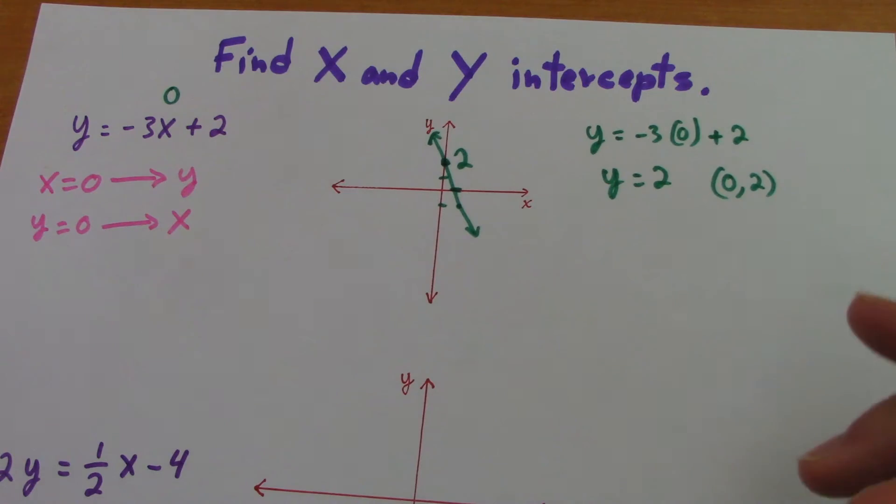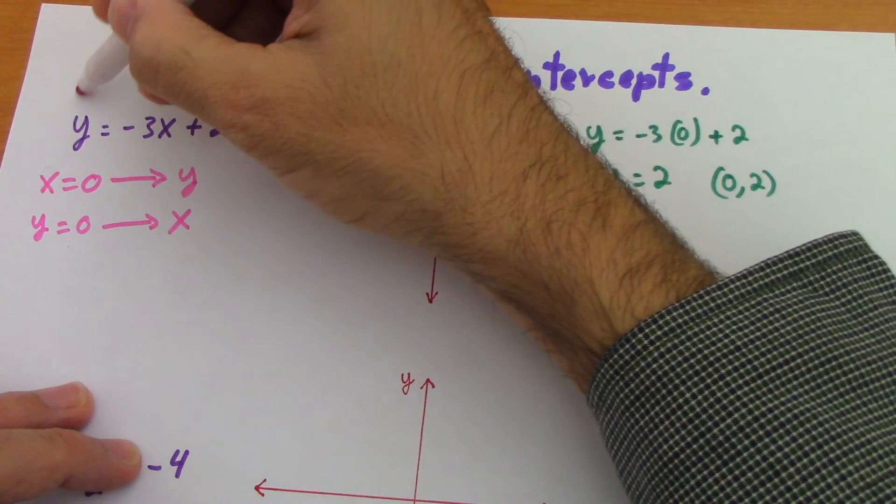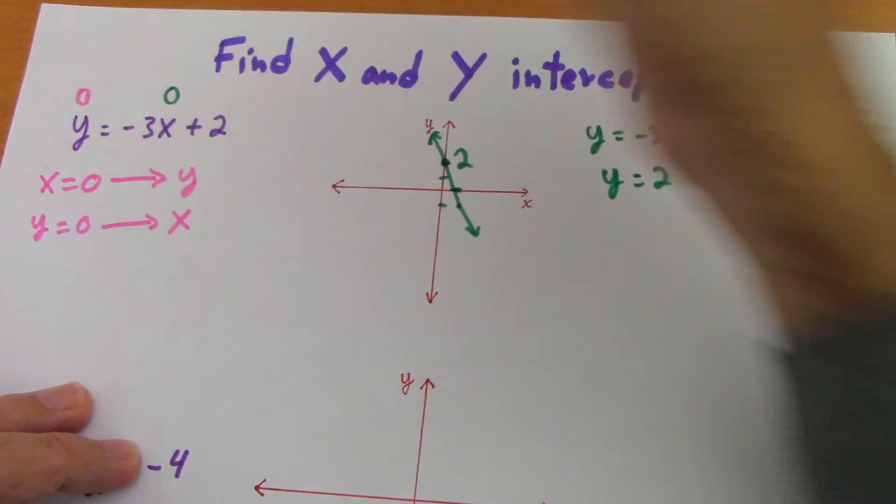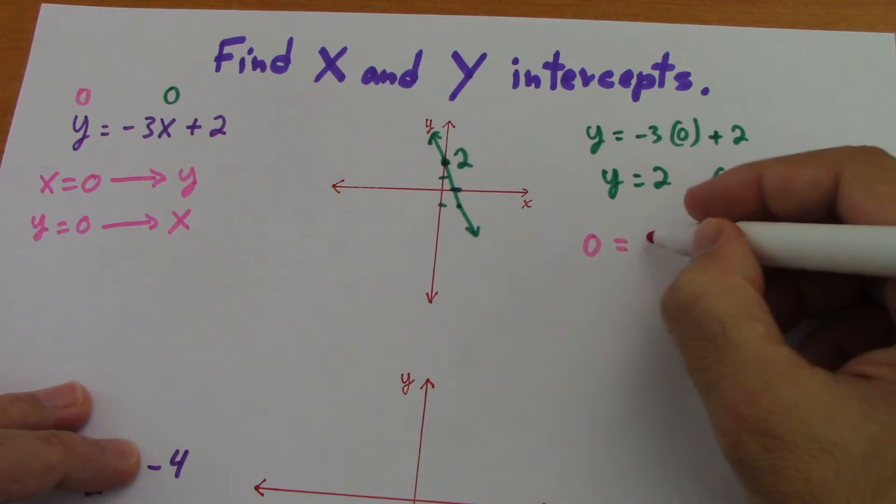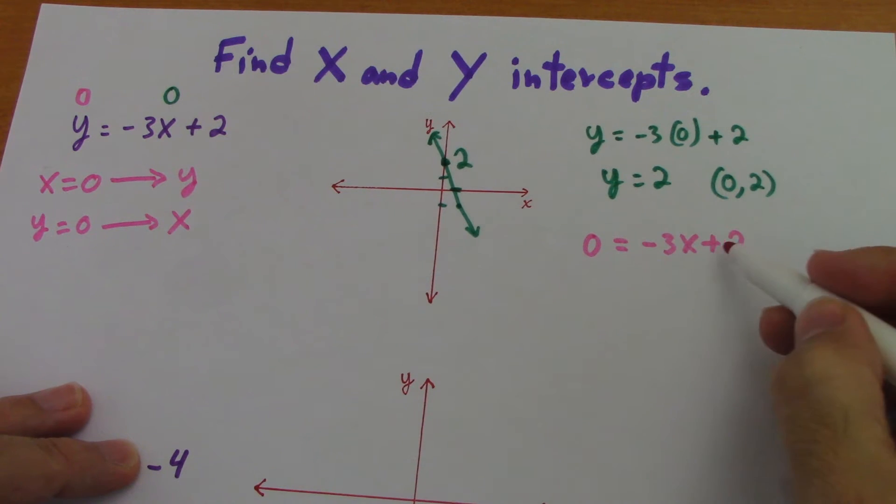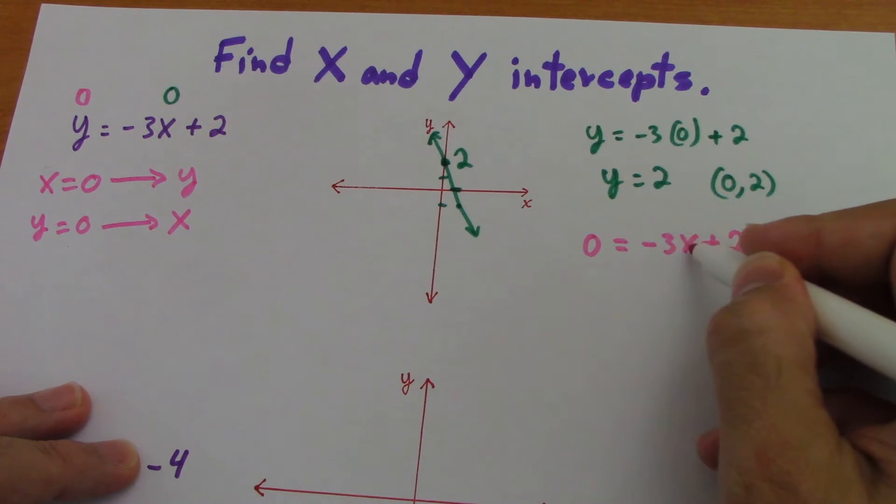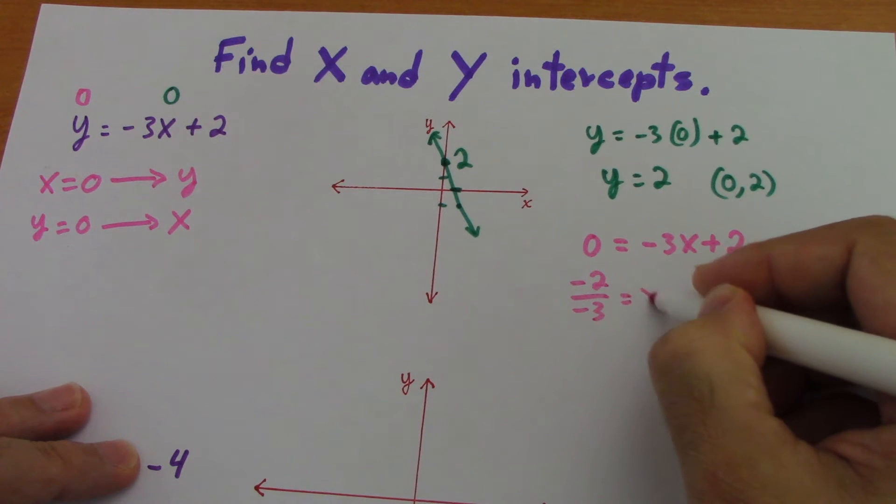Now to find the x intercept, we give 0 now to y. We substitute 0 in y to find the x intercept. This is what we do. 0 equals negative 3x plus 2. So we move the 2 positive here, negative. That would be negative 2 divided by negative 3. Negative 2 divided by negative 3, that's x.